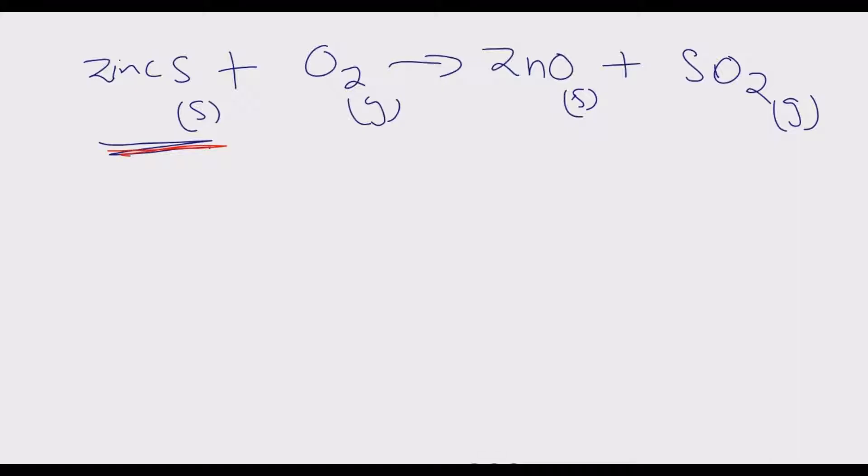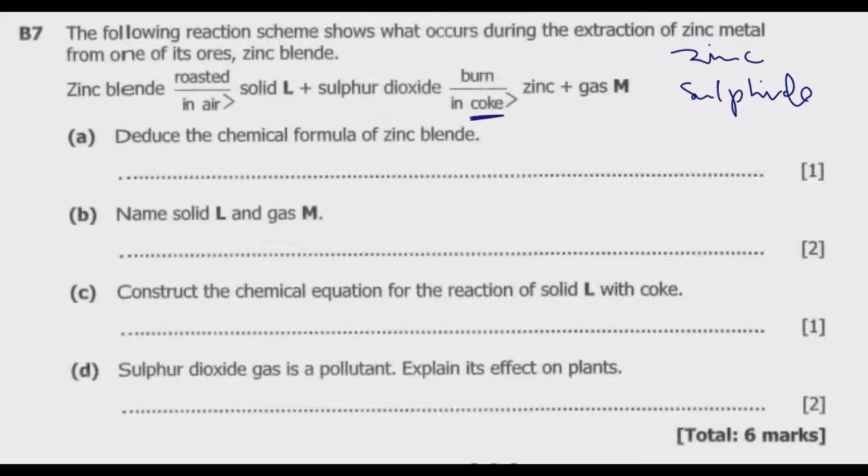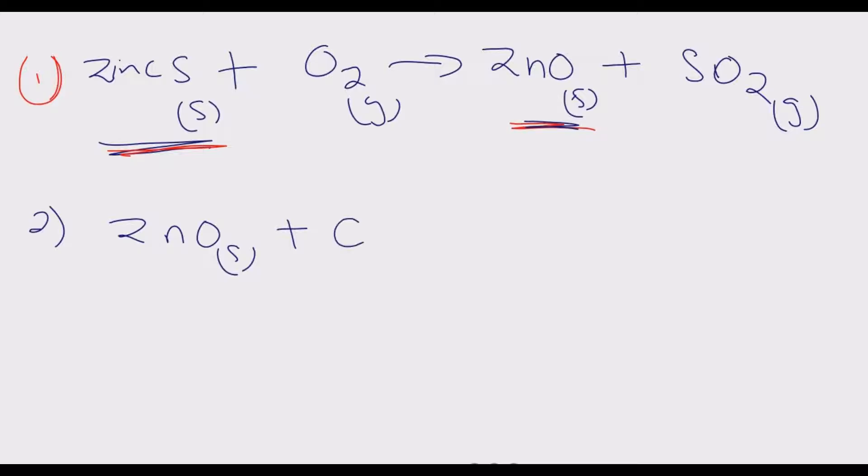This is the first part. Then during extraction, this zinc oxide is again further heated strongly. The heating process takes place in the furnace. We have equation two, which is zinc oxide, which is a solid. It's again further heated in coke. Now this coke is basically carbon, so you heat it in coke, which is carbon solid.